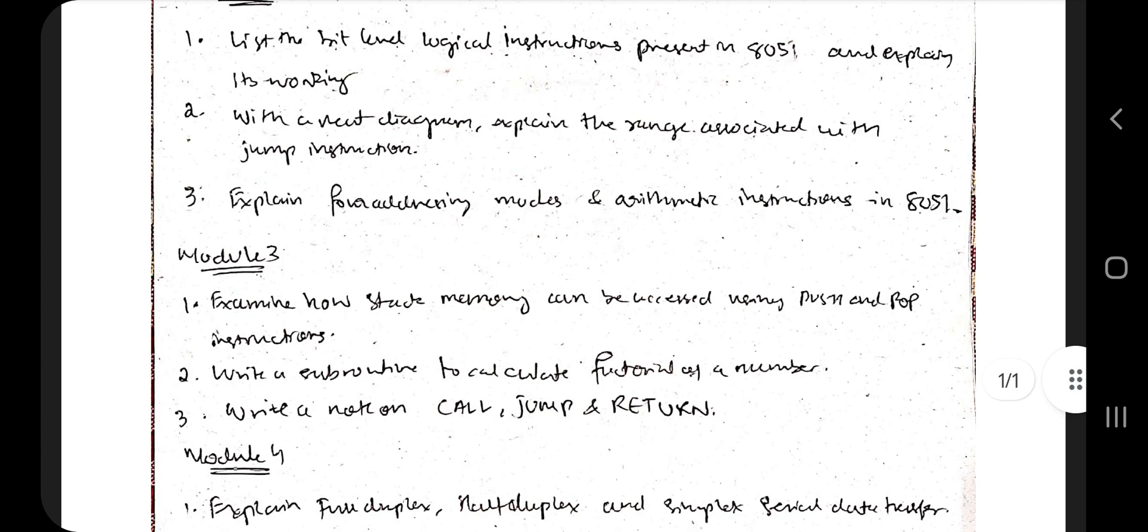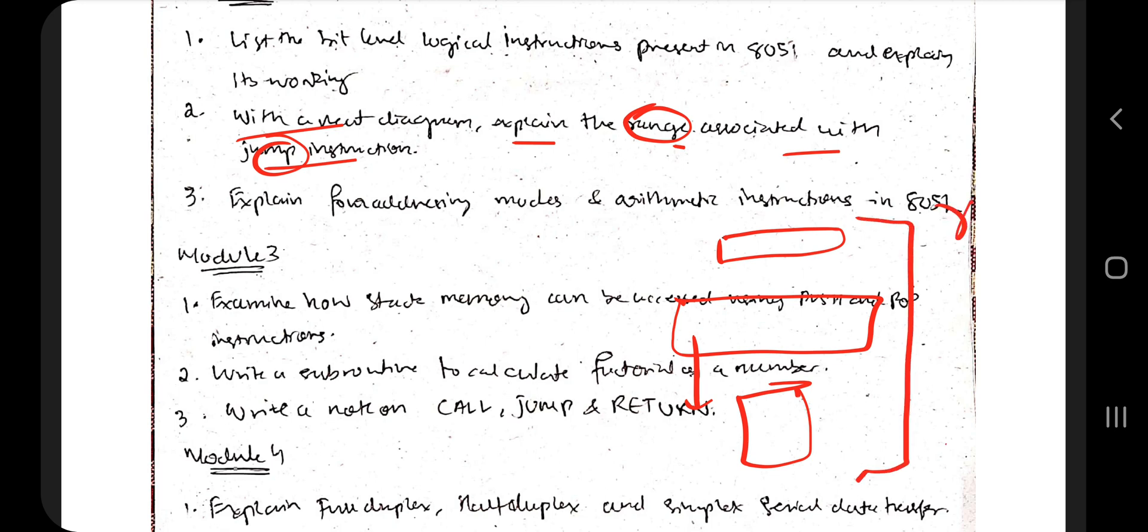The next question: with a neat diagram, explain the range associated with the jump instruction. Write the jump instruction, tell what it means, and how does the jump happen. If there is a code for it, you need to write the code as well. When you are jumping, you need to specify the range from the starting point to the ending point. You'll be specifying the range, how you specify, what is the code for it - those things you have to explain.